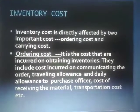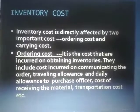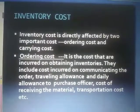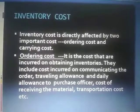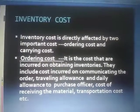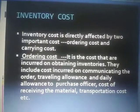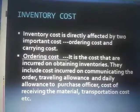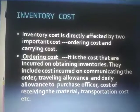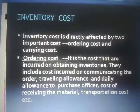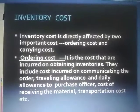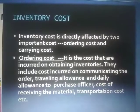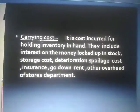Ordering cost is the placement cost. Each time the organization purchases goods, they have to place an order, and each time they place an order they bear some cost. These costs include communication cost, traveling allowances, daily allowances, passes, official costs, cost of receiving the material, and transportation cost. So ordering cost relates to the cost incurred each time an order is placed.